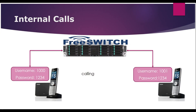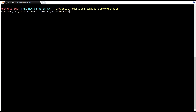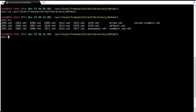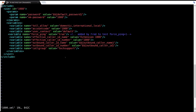Let's take a look at our network diagram for this video. I will assume that you have installed FreeSWITCH and you have a running instance, but your configurations are still at default. FreeSWITCH comes with already configured users or extensions from 1000 to 1019.